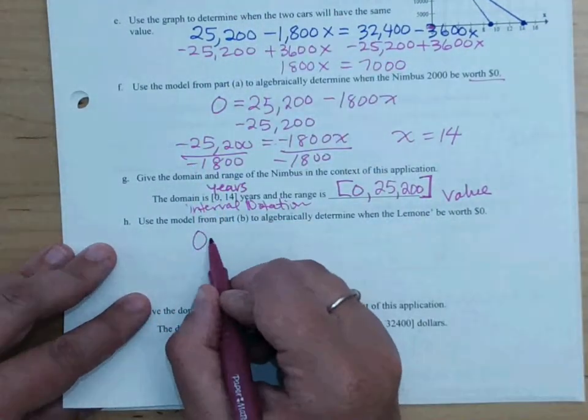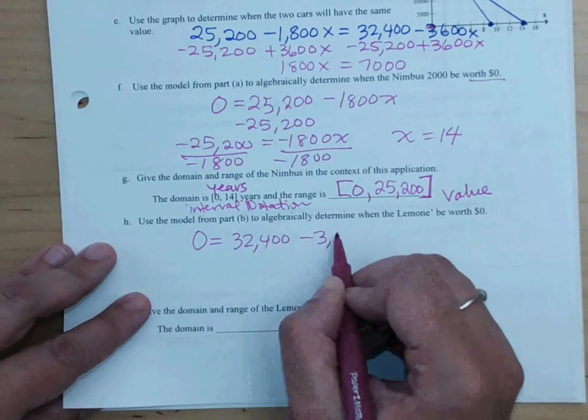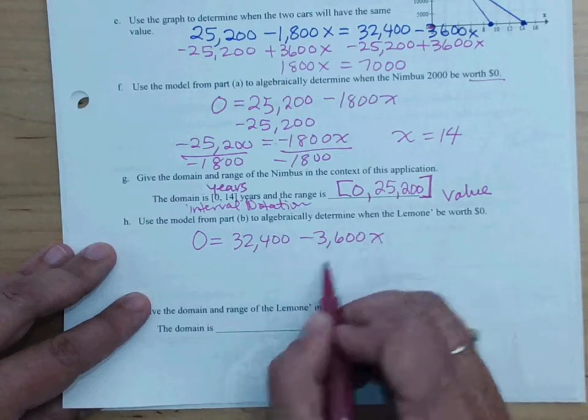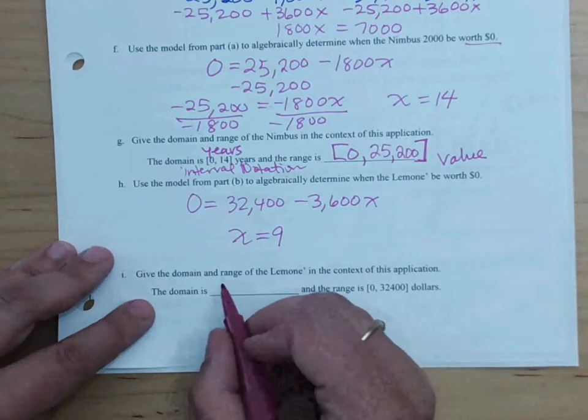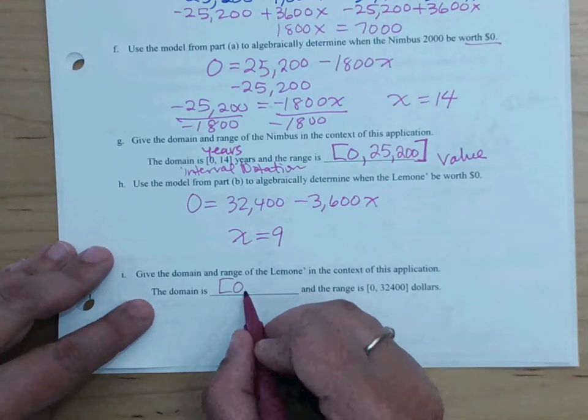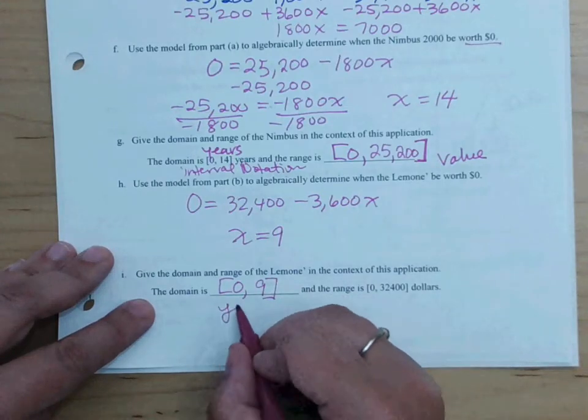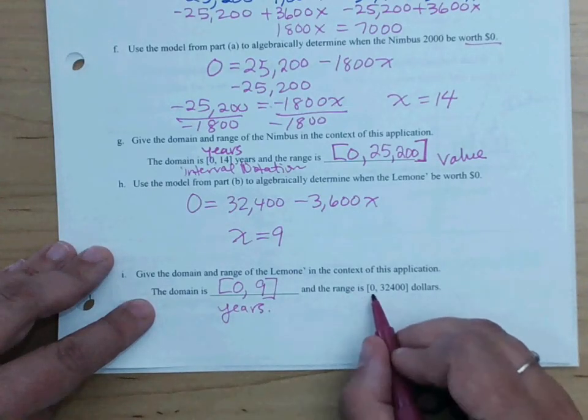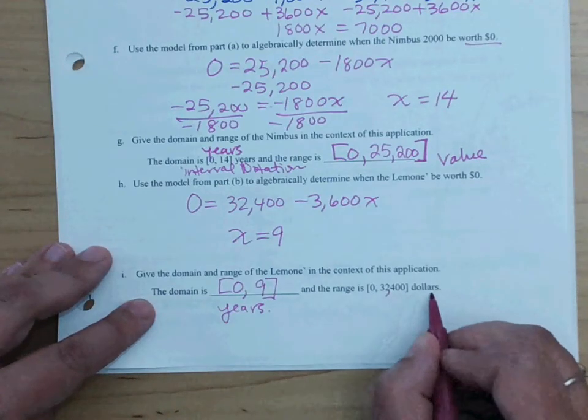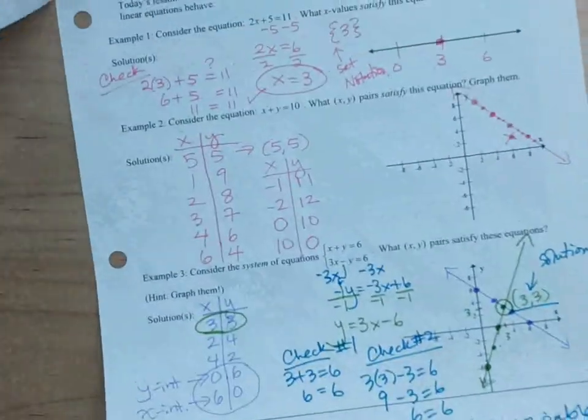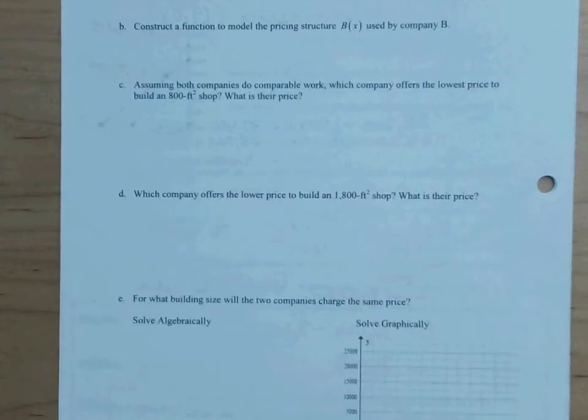Okay, for the Limone, we would set it equal to zero, 0 equals 32,400 minus 3,600x. When you solve for x, you end up getting x equals 9. The domain, then, would be from zero years when you bought it to nine. So this is the years, and the range is from $0 to $32,400. Okay, and we'll stop this one and do the next problem on the next video.